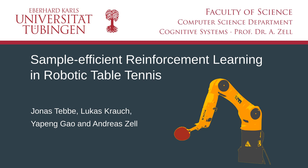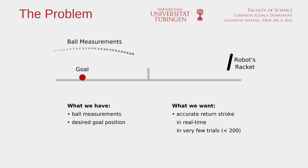Welcome to our demo video for Sample Efficient Reinforcement Learning in Robotic Table Tennis. The problem is as follows: we have ball measurements over time available and a desired goal position on the table, and we want to find an accurate return stroke calculated in real time and adapted over very few trials.